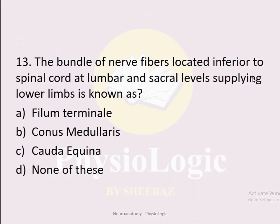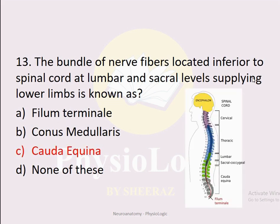MCQ number thirteen: The bundle of nerve fibers located inferior to the spinal cord at lumbar and sacral levels supplying the lower limbs is known as — Option A: filum terminale. Option B: conus medullaris. Option C: cauda equina. Option D: none of these. The correct option is C: cauda equina. The spinal cord terminates at L1-L2 as the conus medullaris, and below it the bundle of nerve fibers is the cauda equina. The filum terminale is the thin pia mater attaching the cord to the coccyx.